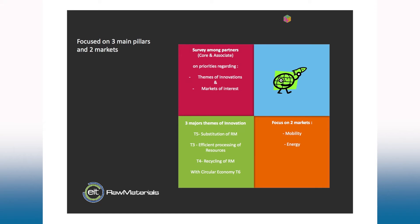Based on a survey of our partners, the Central CLC is mainly interested in three topics: substitution of raw materials, processing of resources, and recycling of raw materials — primarily for the mobility and energy markets.